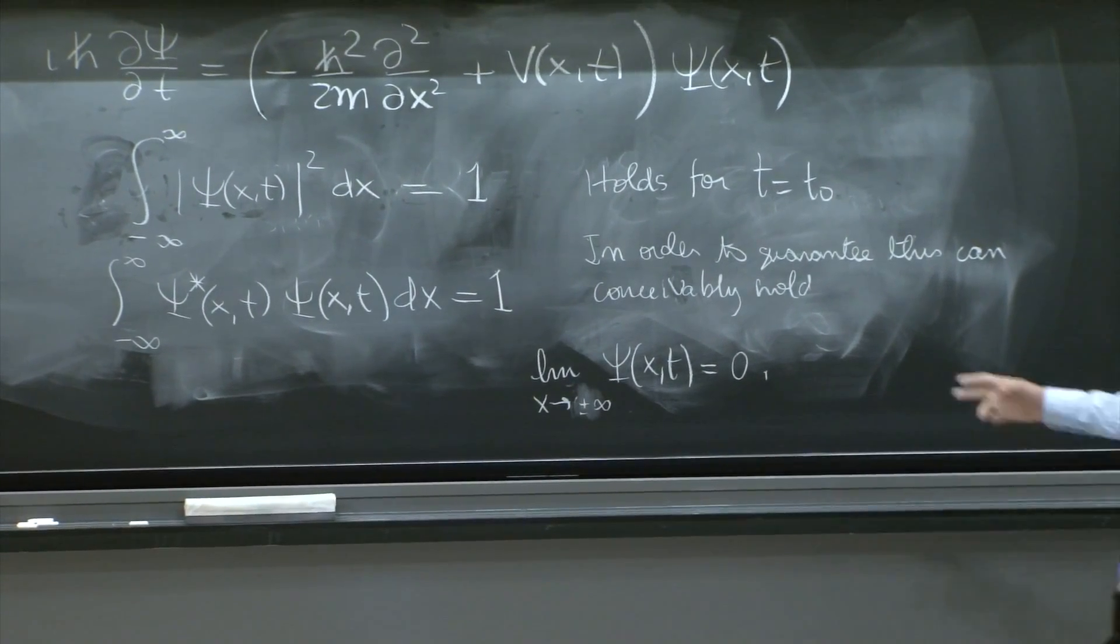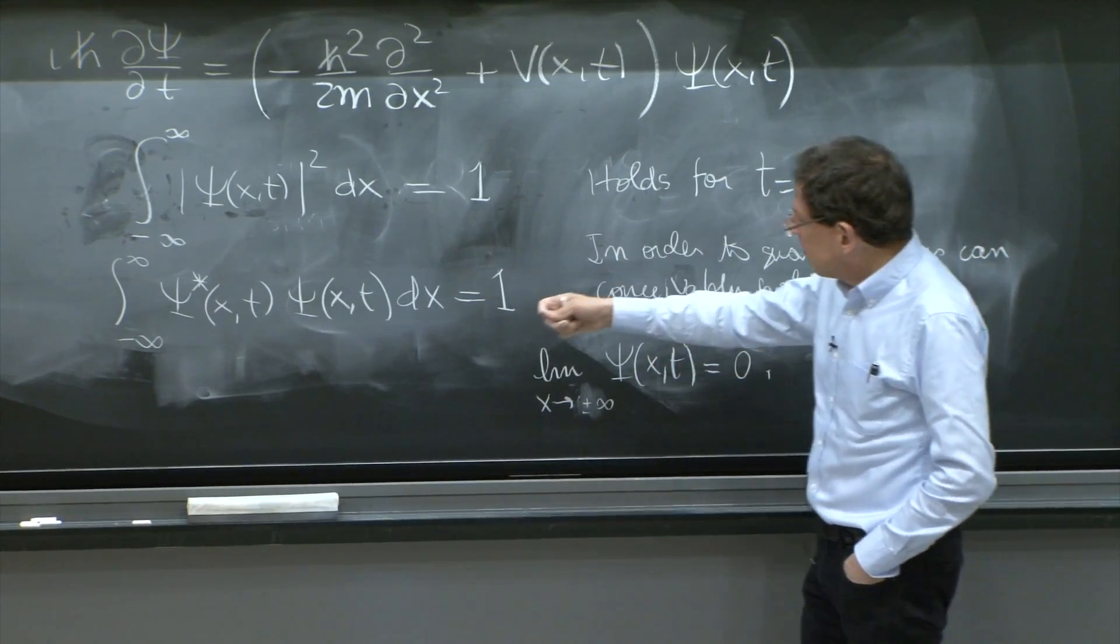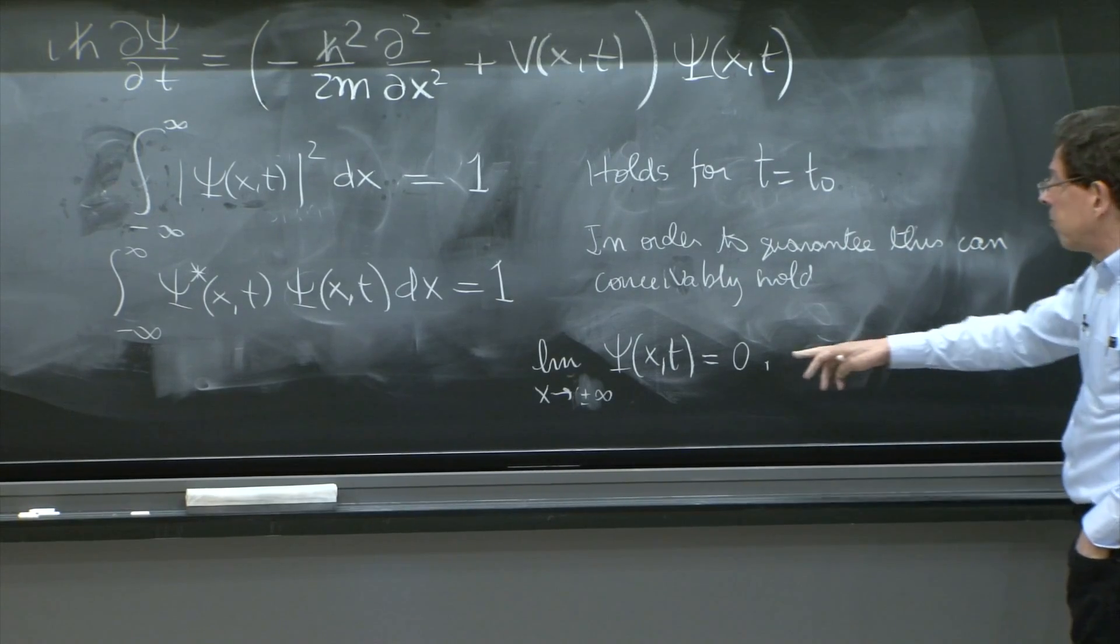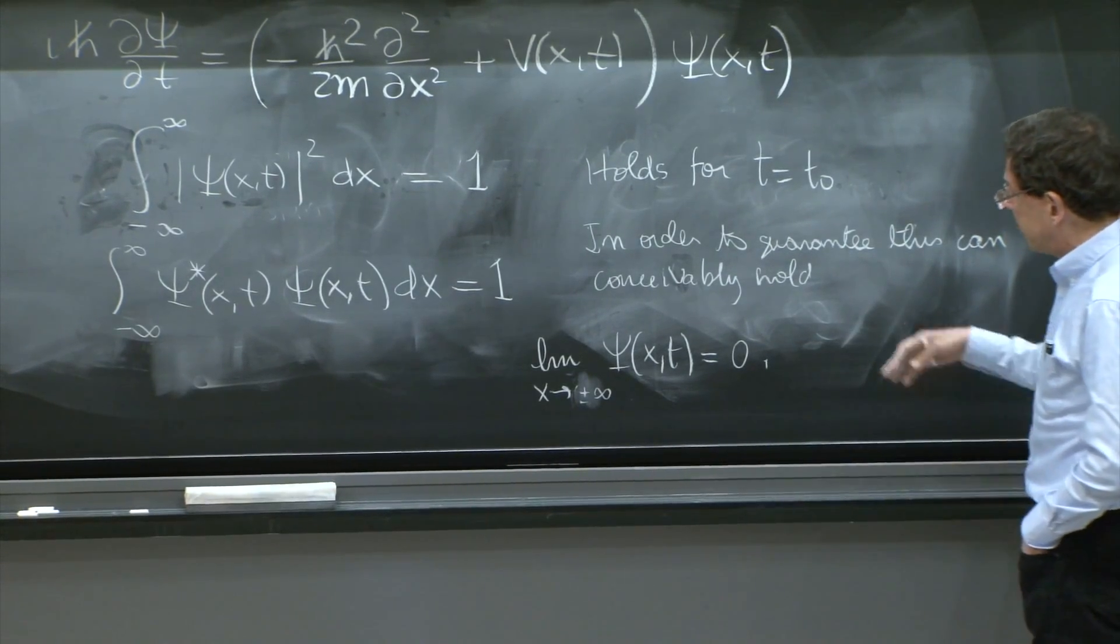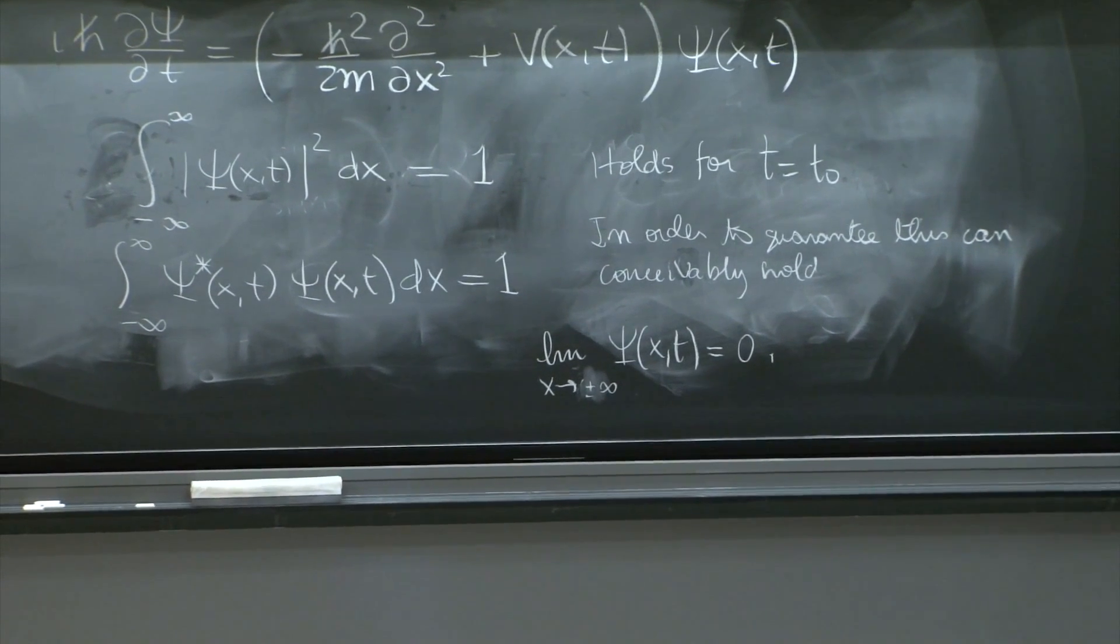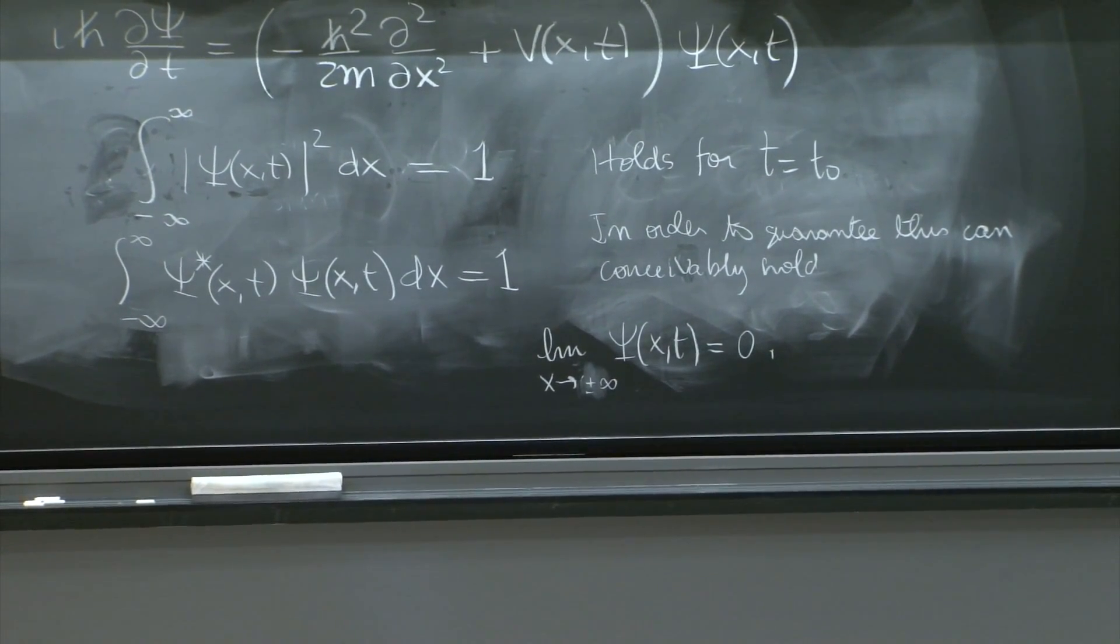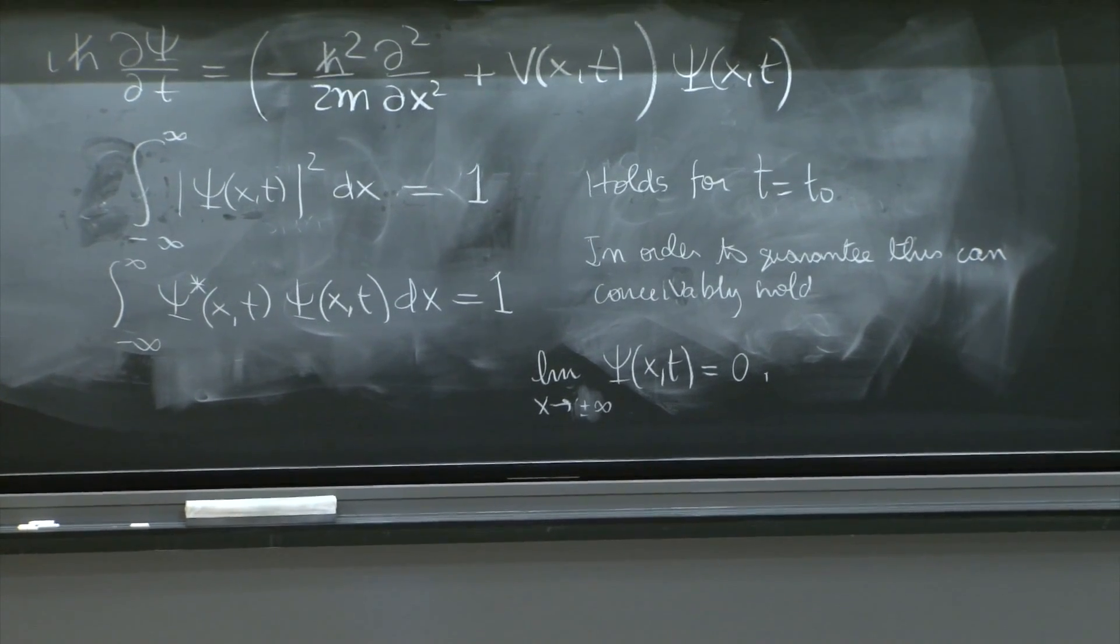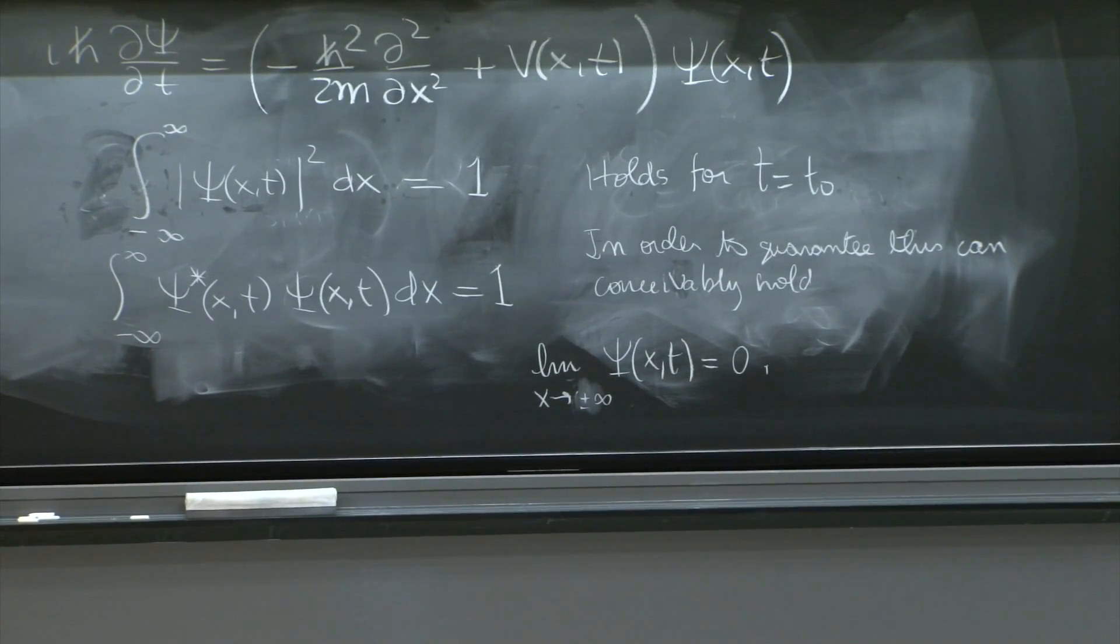So we'll take wave functions that necessarily go to 0 at infinity. And that certainly is good. You cannot prove it's a necessary condition, but if it holds, it simplifies many things. And essentially, if the wave function is good enough to have a limit, then the limit must be 0.